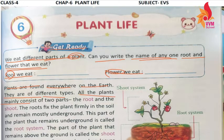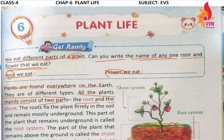All plants mainly consist of two parts. These two parts are divided based on where they are present. How many parts are plants divided into? Two parts. First we have the root and then we have the shoot. So root and shoot are the two parts.